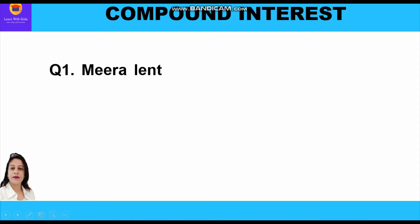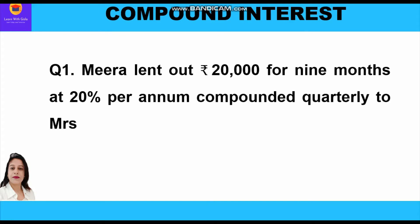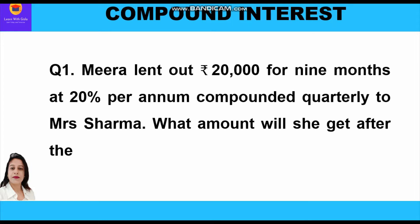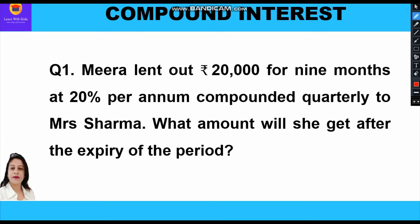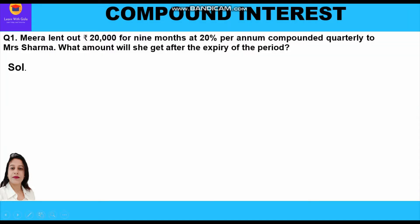Now let's take the first question. Mira lent out rupees 20,000 for nine months at 20 percent per annum compounded quarterly to Mrs. Sharma. What amount will she get after the expiry of the period? Mira has lent out rupees 20,000 — that is our principal — for nine months at 20 percent per annum, compounded quarterly.